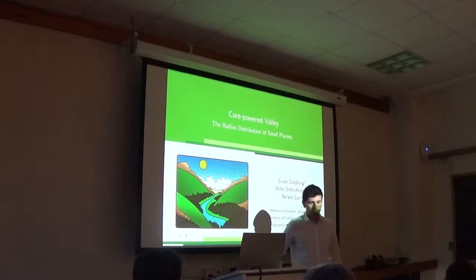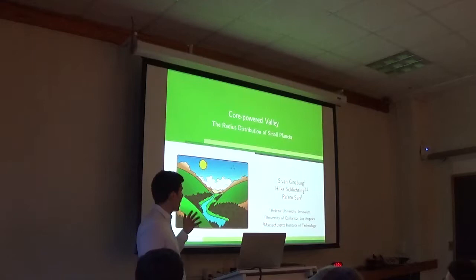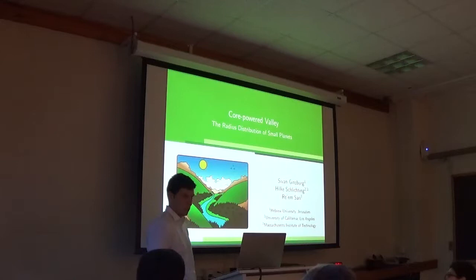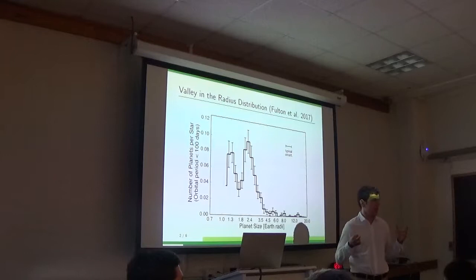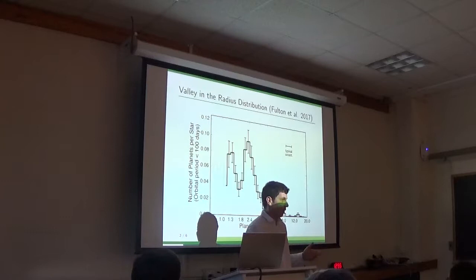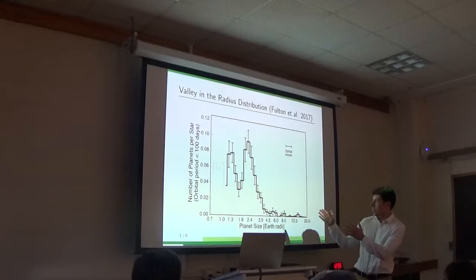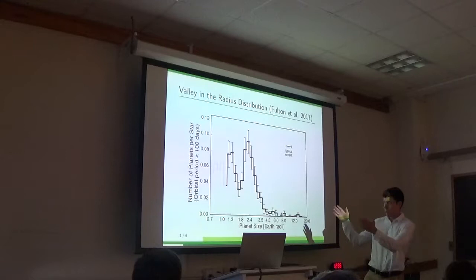So hi. I'm Sivan Ginsburg. I'm a student from Jerusalem. And I'll talk about the varying radius distribution of small exoplanets. This is work done together with Hilke Schlichting from UCLA. So the largest uncertainty in clarifying a planet's radius is knowing the radius of its host star. So the California-Kepler Survey refined estimates of over 1,000 stars. And that allowed them to get this sample of planets with relatively precisely measured radii.